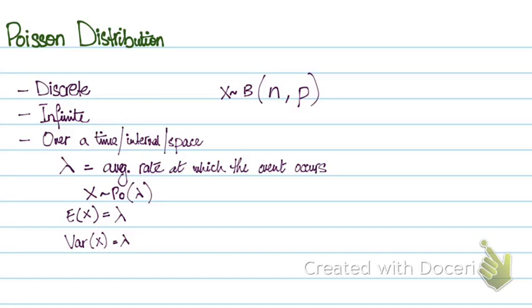So to summarize: a Poisson distribution is infinite, events occur over a time interval or space, there is only one parameter lambda, the expected value is lambda, the variance is lambda, and the formula to calculate probability is: P(X = x) = e to the power of minus lambda, multiplied by lambda to the power x, divided by x factorial.